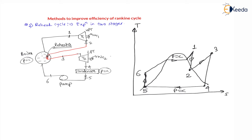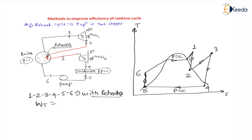The total cycle is 1, 2, 3, 4, 5, 6 with the reheater. Reheater is from 2 to 3, and there are 2 turbines: turbine 1 is 1 to 2, and turbine 2 is 3 to 4. With the reheater, work of turbine equals work of turbine 1 plus work of turbine 2, that is (H1 − H2) + (H3 − H4).